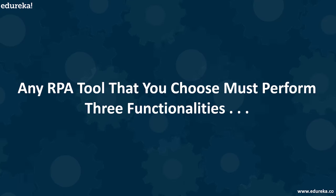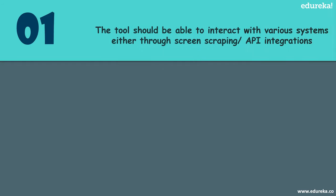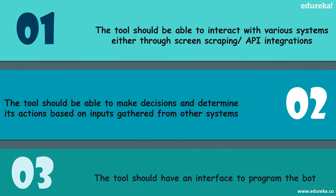Any RPA tool you choose must perform three functionalities: it should be able to interact with various systems either through screen scraping or API integrations; it should be able to make decisions and determine its actions based on inputs gathered from other systems; and it should have an interface to program the bot.